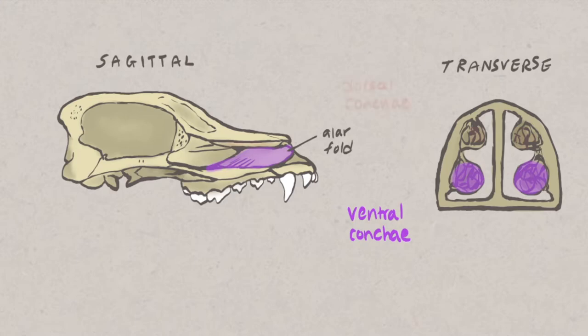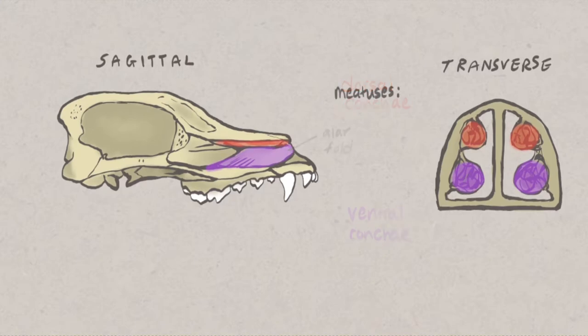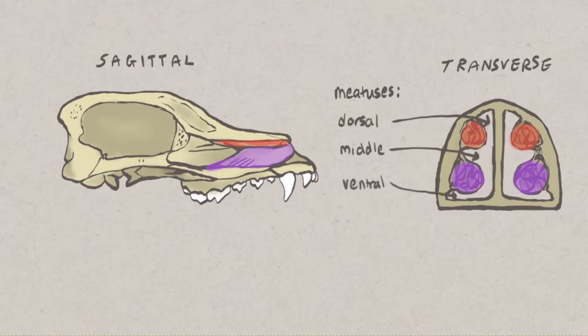The dorsal conchi are located dorsally within the nasal cavity. Between these folds are canals known as meatuses. Within each nasal cavity are a dorsal, middle and ventral meatus, with the common meatus running parallel to the septum. These are small spaces in real life, but they have been enlarged in this diagram to demonstrate them better.